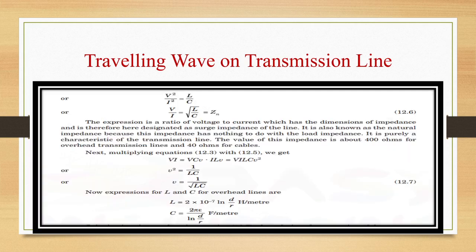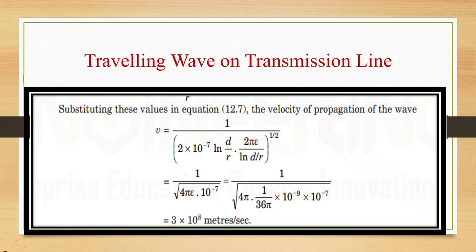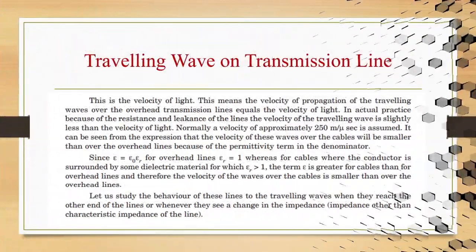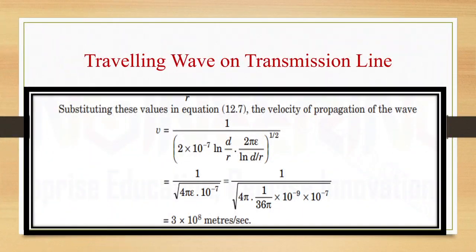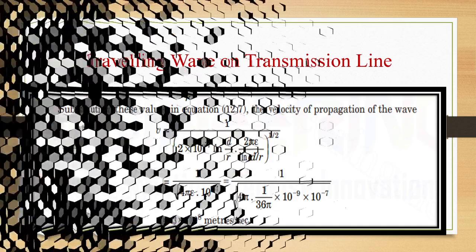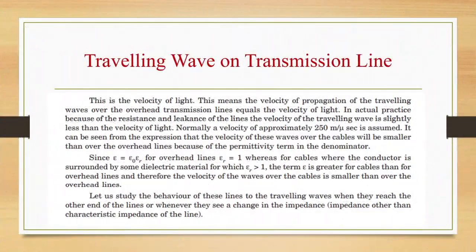We have derived the equations for current and voltage and obtained the velocity as 3×10⁸ meters per second after substitution of all values. This is the velocity of propagation of a traveling wave over an overhead transmission line. In actual practice, because of resistance and leakage of the lines, the velocity is slightly less than the speed of light. Normally a velocity of approximately 250 meters per microsecond is assumed. The velocity of waves in cables is smaller than in overhead lines because of the permittivity term in the denominator.